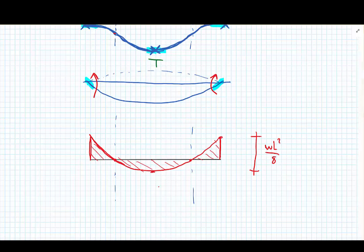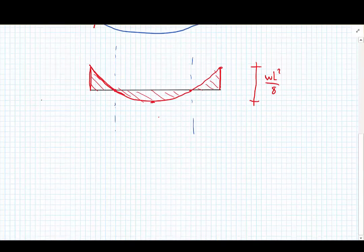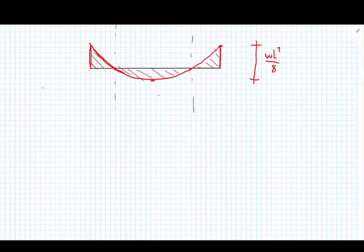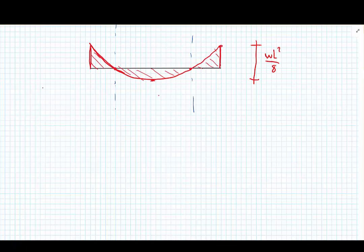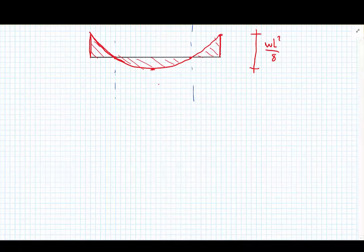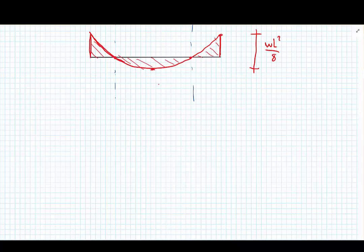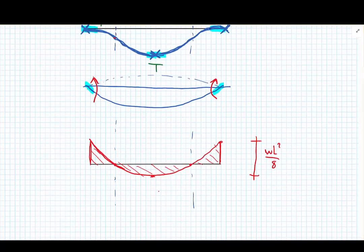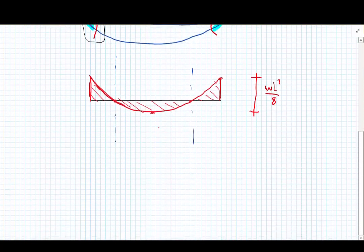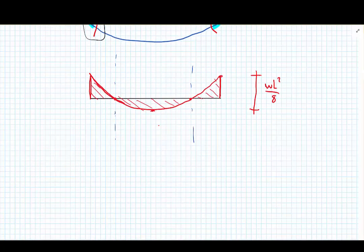And that leads us on to a very important concept: we consider the bending moment that we get from this indeterminate structure as a summation of two determinate structures. So we can imagine the beam with just these moments applied at the ends and a simply supported beam with a UDL.